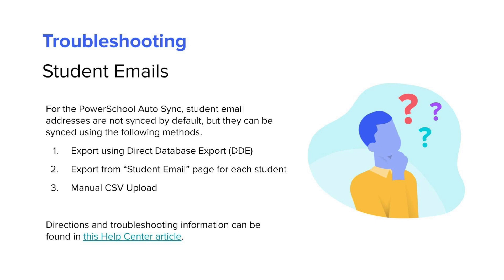Student emails are a common point of confusion for districts using the PowerSchool AutoSync. Clever's sync with PowerSchool does not automatically pull emails for students. However, we can update your configuration to do so. There are a few options available. If the emails are stored on either the student emails page or in a field exportable by PowerSchool's direct database export tool, contact Clever support and we can update your AutoSync configuration to pull student emails. If stored in an alternate location, student emails can be uploaded using a CSV in the Clever dashboard. For more information on this subject, please see Clever's Help Center.